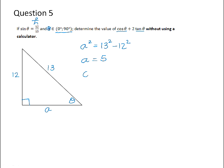So if we now want the value of cos θ plus 2 tan θ, cos θ is adjacent over hypotenuse, so it will be 5 over 13. And 2 times the tan of θ will be opposite over adjacent, which will be 12 over 5. And if you punch that fraction into your calculator, you get a value of 337 over 65.